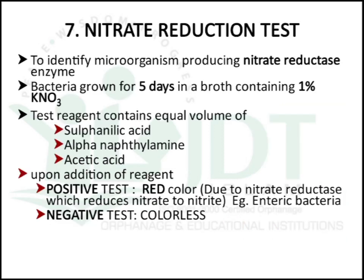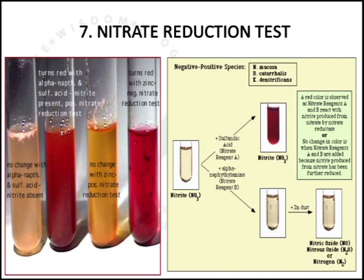The next test is the nitrate reduction test, used to identify microorganisms that produce the enzyme nitrate reductase. Bacteria grow for 5 days in a broth containing 1% potassium nitrate. The test reagent consists of sulphanilic acid, alpha-naphthylamine, and acetic acid. A positive test gives red color due to nitrate reductase reducing nitrate to nitrite — example: enteric bacteria. A negative test gives colorless.